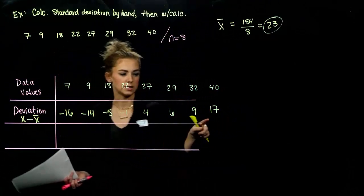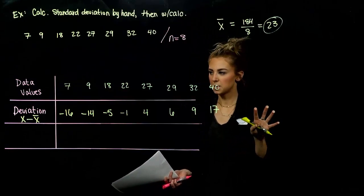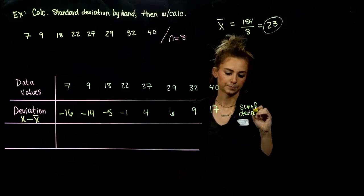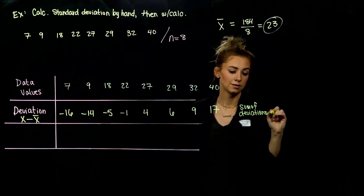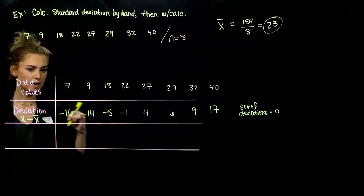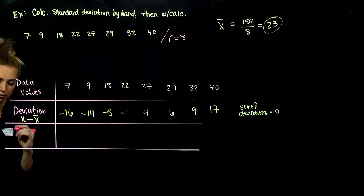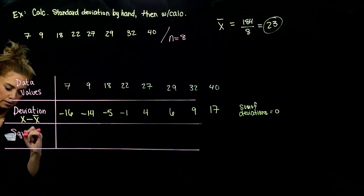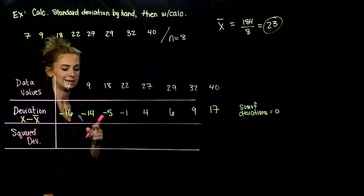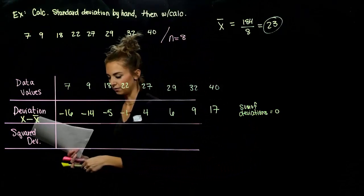If we sum all of these deviations, the sum of deviations should be 0 — they all cancel each other out. So to circumvent that problem, what do we do with each of those deviations? We square them. Negative times a negative is a positive, so we get rid of the problem of them all canceling out.